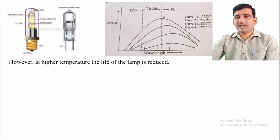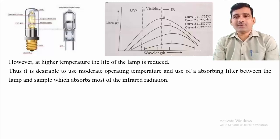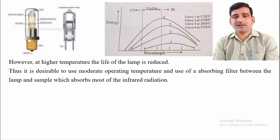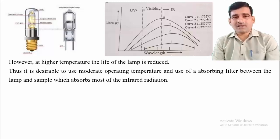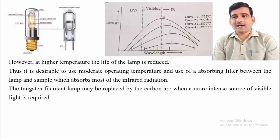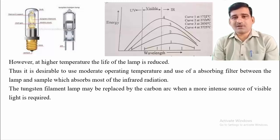An absorbing filter placed between the lamp and the sample can absorb most of the near-infrared radiation, transmitting only the visible-region light. The tungsten filament lamp may also be replaced by a carbon arc lamp when a more intense source of visible light is required. The carbon arc lamp produces an arc between two rods in a glass bulb, giving more intense light in the visible region.